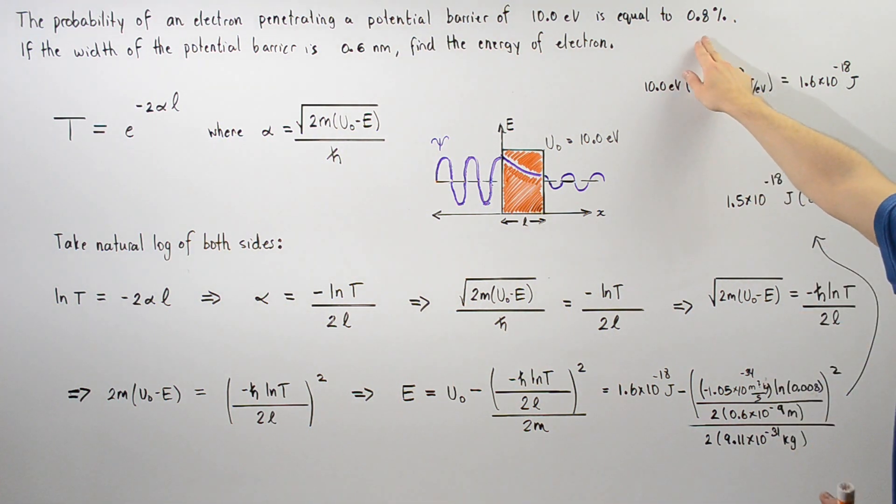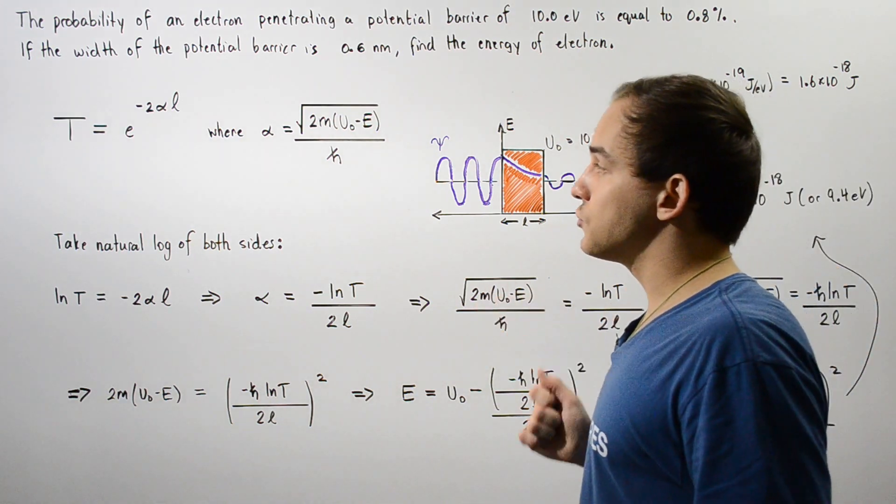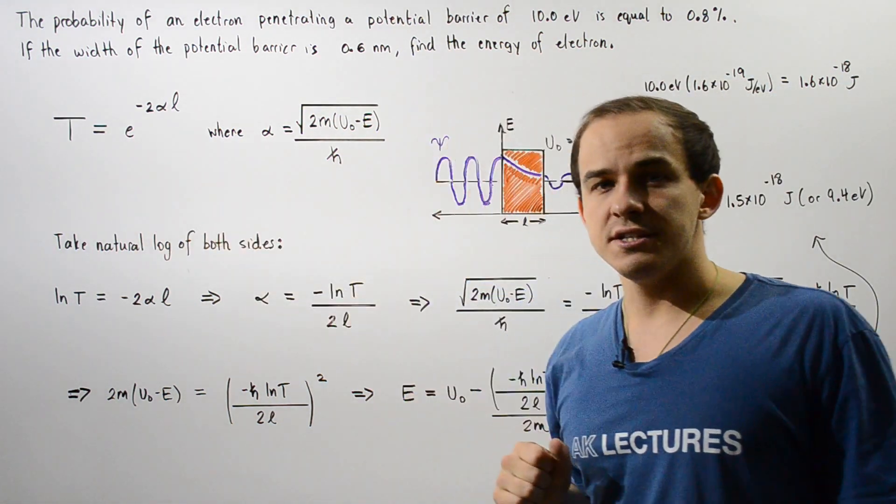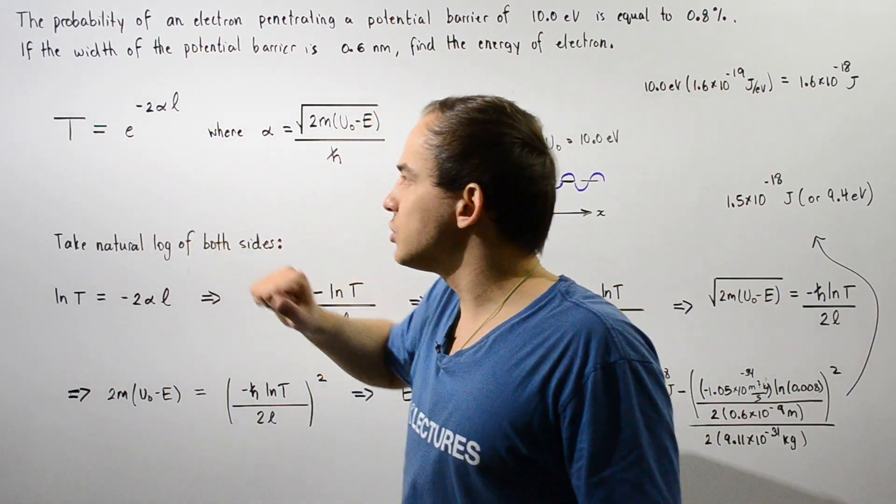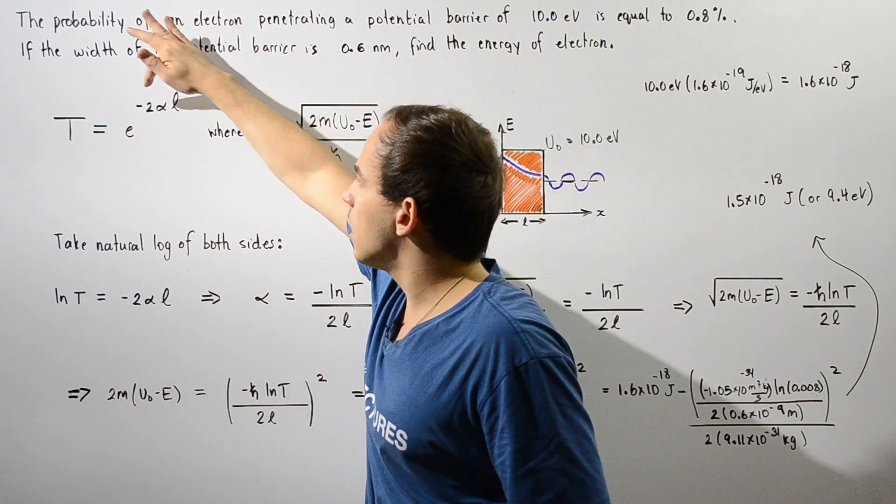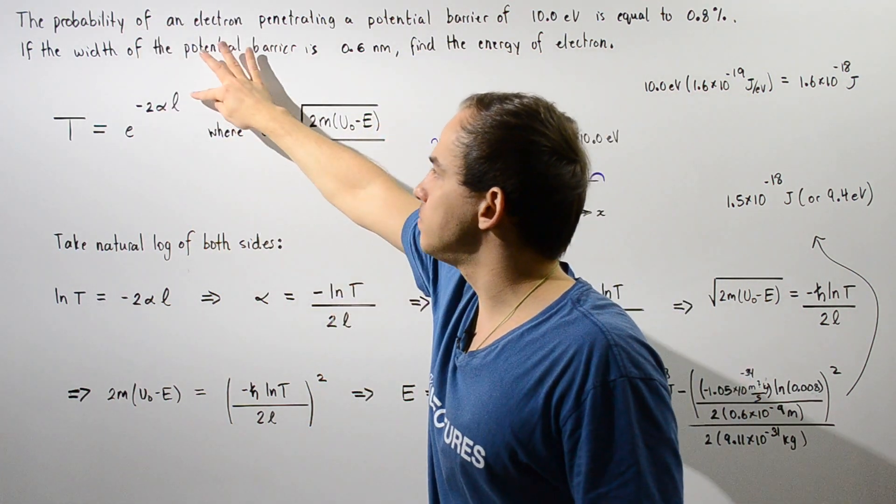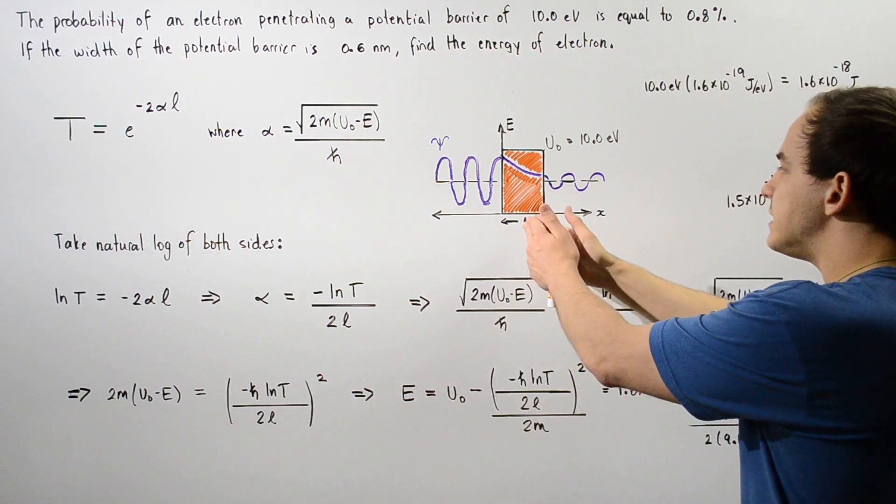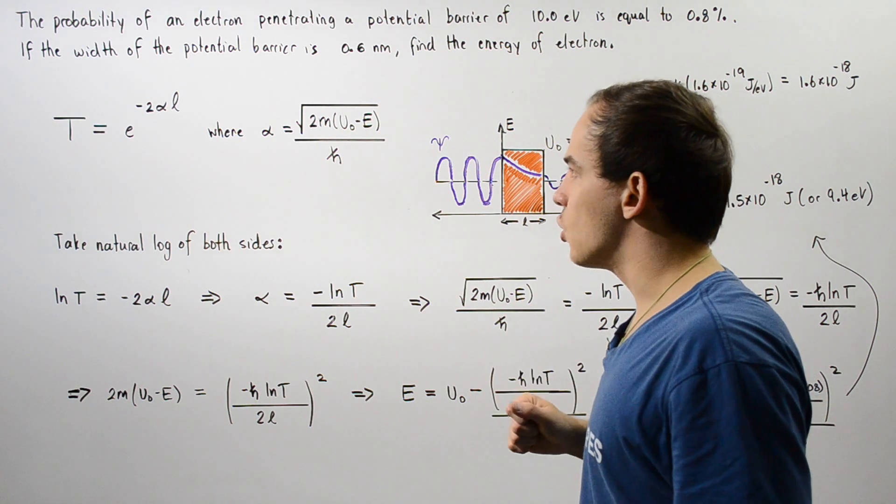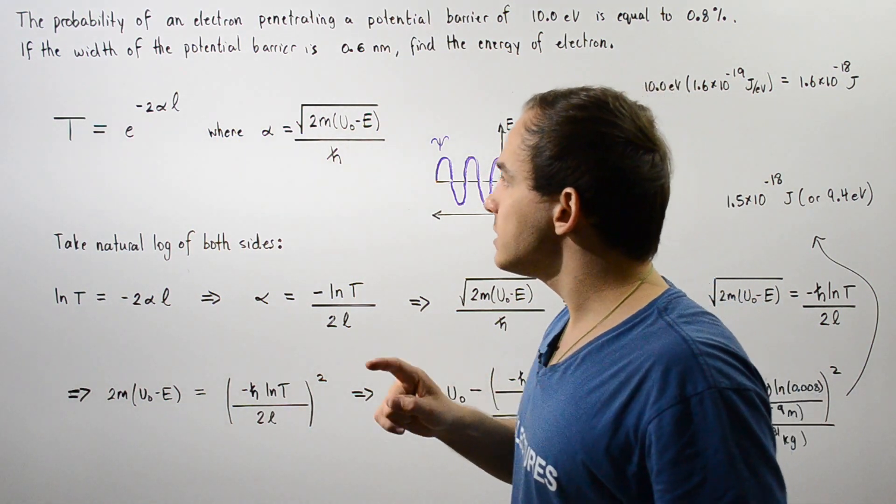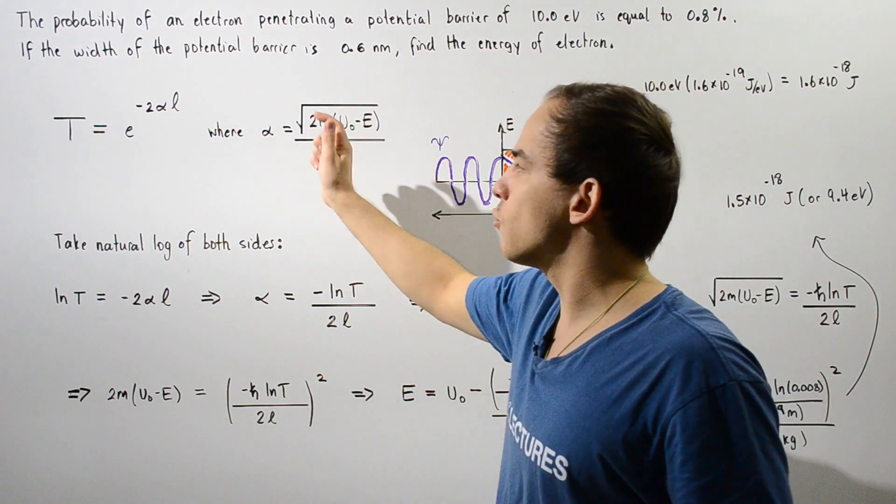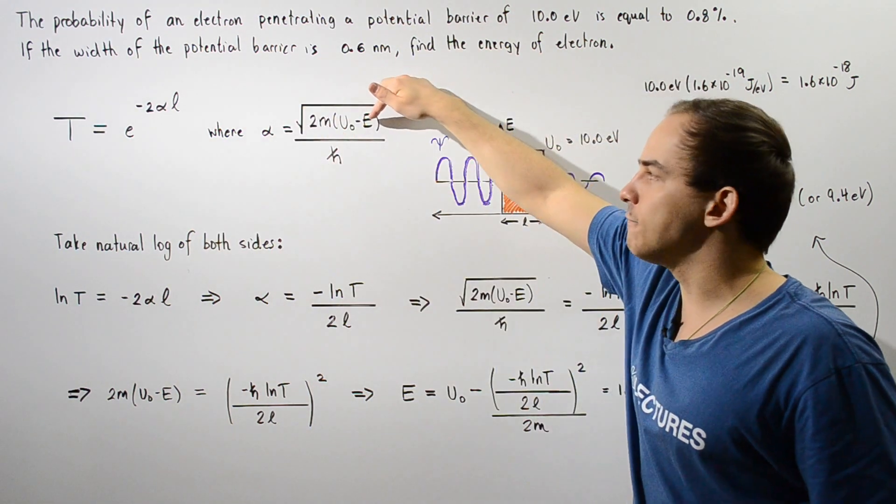We basically want to use this to calculate our energy of the electron and we're going to calculate it using this equation. The transmission coefficient T is equal to e to the power of negative 2 multiplied by alpha multiplied by L where L is the width of the barrier. We want to first solve for alpha and then plug in this quantity for alpha and then solve for E.